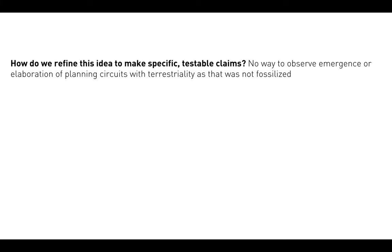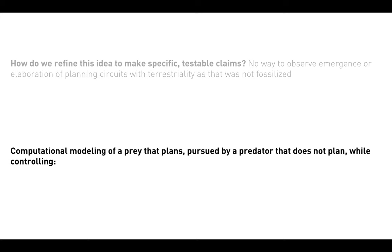How do we really refine this idea to make specific testable claims? There's no way to observe the emergence or elaboration of planning circuits with terrestriality 380 million years ago, because that wasn't fossilized. So we're going to do a series of computational experiments, focusing on predator-prey interactions — a dominant driver of evolution, particularly up to 50 million years after animals made landfall, when the first vegetarians emerged. We'll look at a prey that plans, pursued by a predator that does not plan, while we control sensory range, the amount of planning the prey is allowed to do, and environmental complexity.